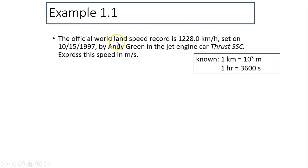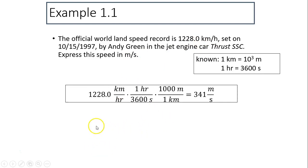Another example: the official world land speed record is 1228 kilometers per hour, set on 10/15/1997 by Andy Green in the jet engine car Thrust SSC. Express this speed in meters per second. So we have to convert kilometers to meters and hours to seconds.